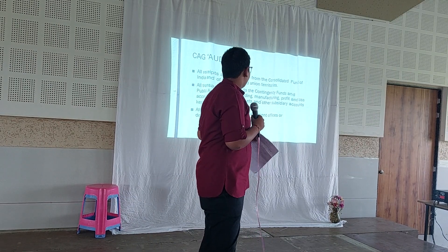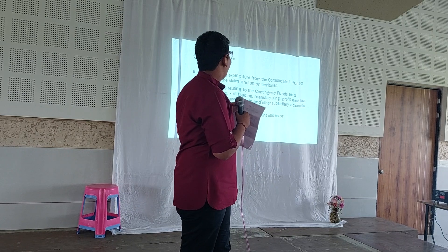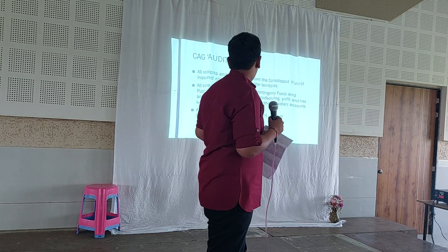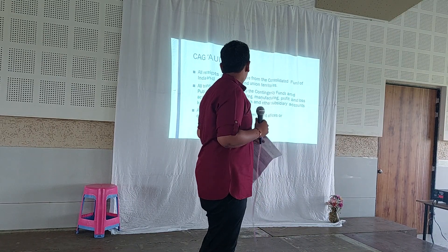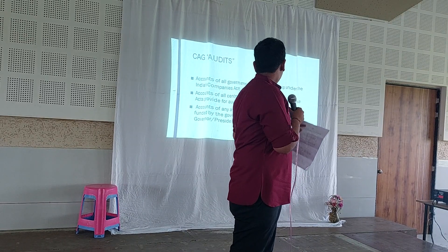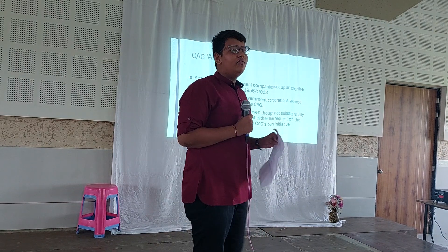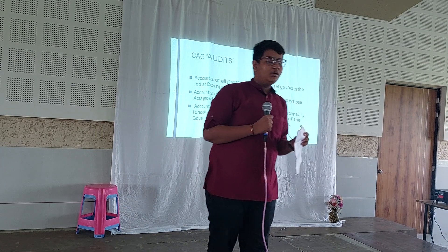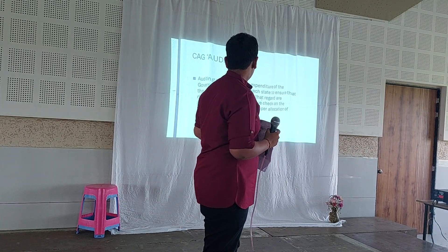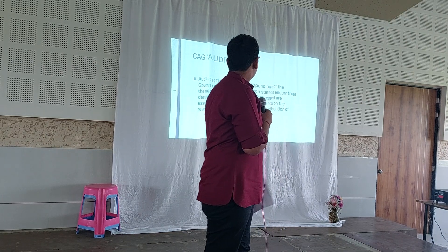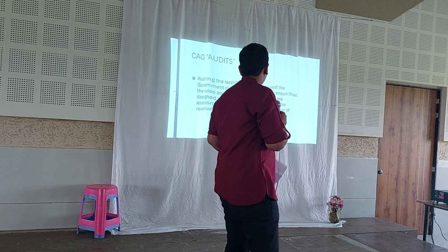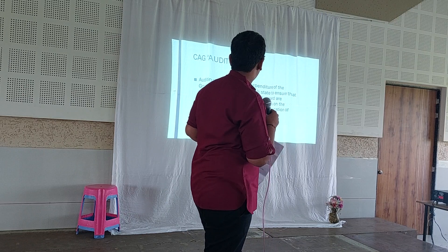CAG audits all the receipts and expenditure from the Consolidated Fund of India, Contingency Fund, and Public Accounts. It audits all trading, manufacturing, profit and loss accounts, and balance sheets of all companies. It also audits all stores and stock of government authorities, accounts of central government corporations whose act provides for audit by the CAG, and accounts of authorities not financed by the government but audited on the request of the Governor or the President. Additionally, it audits receipts and expenditure of the Government of India and each state to ensure that rules secure an effective check on assessment, collection, and proper allocation of revenue.